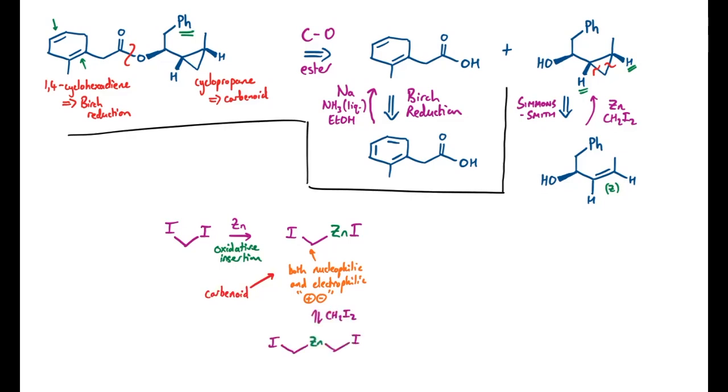Now depending on the ratios of reagents, it's also possible for this carbenoid to insert into another diiodomethane to give this species with two carbons in it. Both of these essentially react in the same way with an organic substrate, but if you were looking into the kinetics of this reaction, you'd need to factor this in.